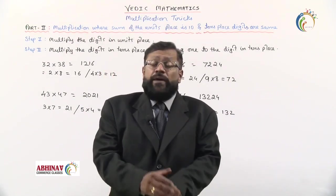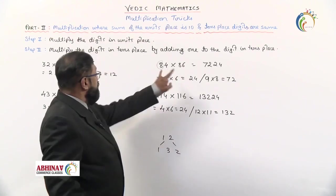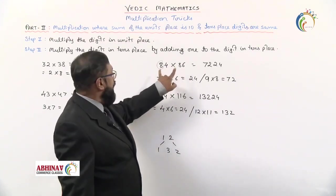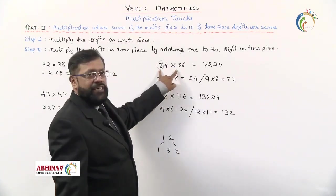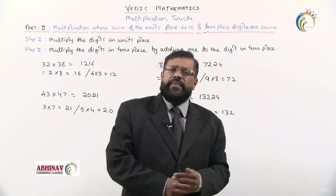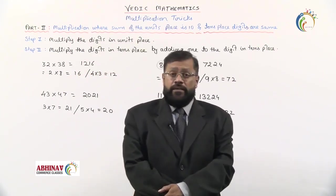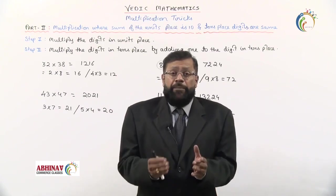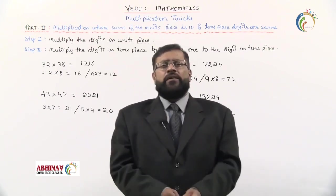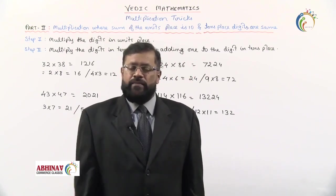This way, any numbers can be multiplied quickly where the units place digits sum to 10 and the remaining digits are the same. In this session we learned multiplication tricks Part 2. In the next session we shall take up multiplication tricks Part 3. Thank you.